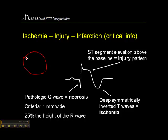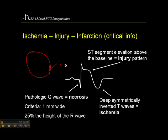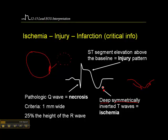Imagine this is your myocardium, and this is the area where you're having an infarct. If you were to look at that a little closer, what you would see is areas of tissue which are ischemic, and that might be represented by these deep symmetrically inverted T waves. It's important that they're deep and that they are symmetrically inverted, as opposed to a T wave where the initial phase is longer than the terminal phase — that would not be considered symmetrical.